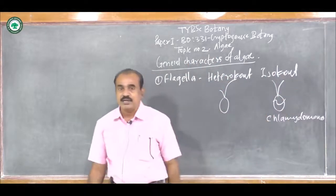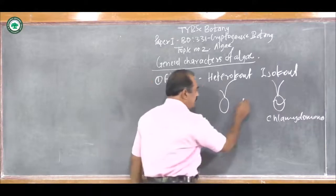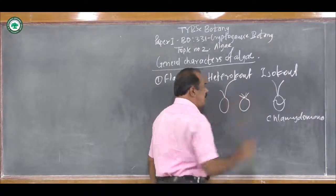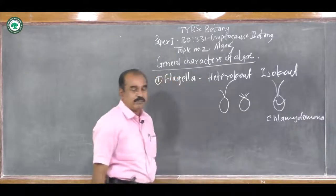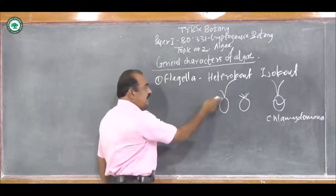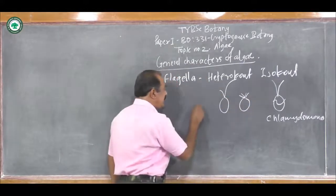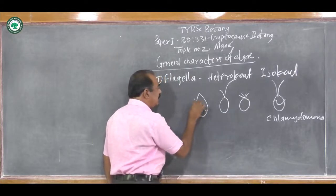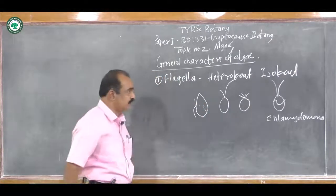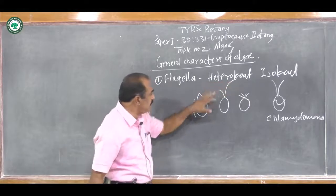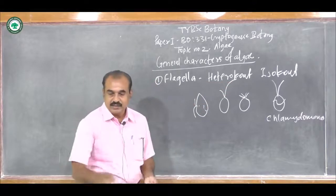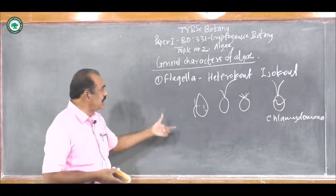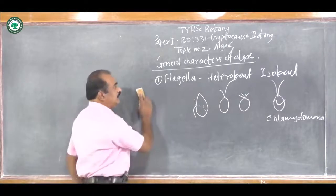There are other types of Flagella as well. For example, quadriflagella type of Flagella are also there. These are the anteriorly inserted Flagella, but in some forms laterally inserted Flagella are also there. So these are anteriorly inserted and these are laterally inserted. Such different types of flagellation are found in the Algae.